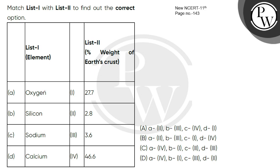If we see in list 1 there is oxygen. If we see in the earth's crust, how much percentage of the earth's crust is oxygen? Oxygen is 46.6%. Here is a correct match of 46.6%.